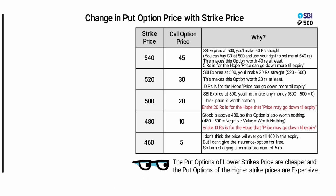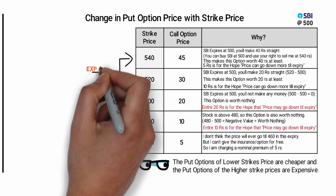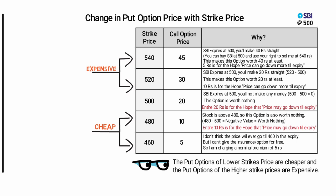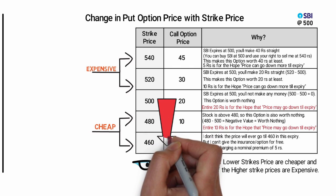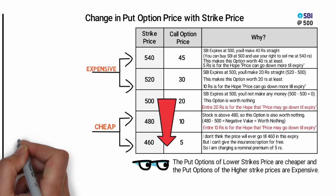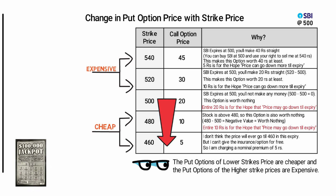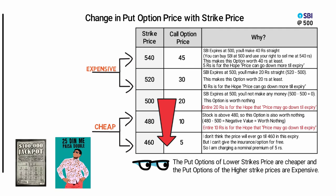Look at the table and remember: the put option of a lower strike price is cheaper, and the put option of a higher strike price is expensive. As we move from 500 to 460, option buyers are less likely to make money — this explains why it is so cheap. That's why they are called lottery tickets. Like lottery tickets, option buyers buy these cheap options to win big in the market. And we know what usually happens to lotteries.